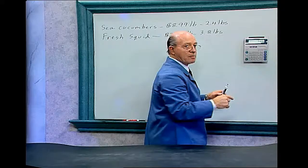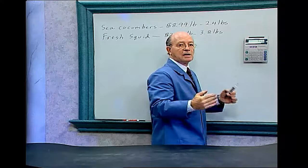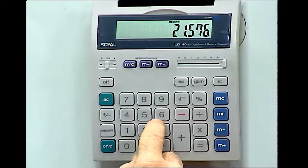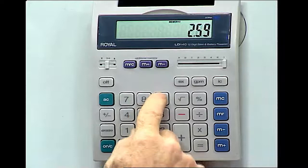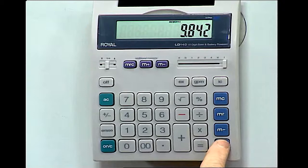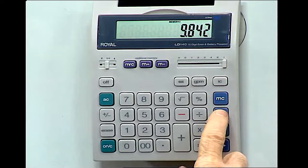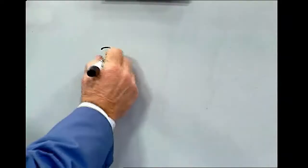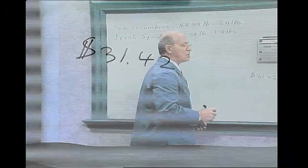And you see up there is the word Memory. That tells us now that the calculator has that number in memory. Now let's get the next number. The fresh squid is $2.59 times 3.8 pounds equals, and that's $9.84. Again, Memory Plus. Now both numbers are added together. Now we want to recall the memory. What do those two numbers equal? And it's $31.42.